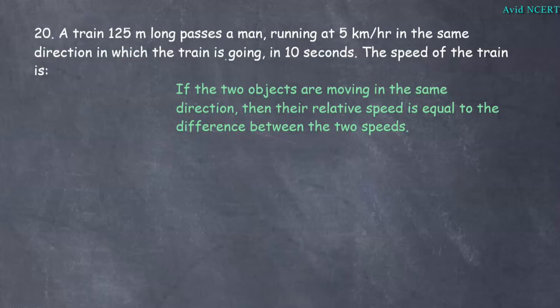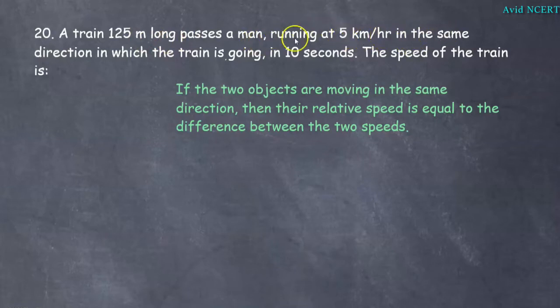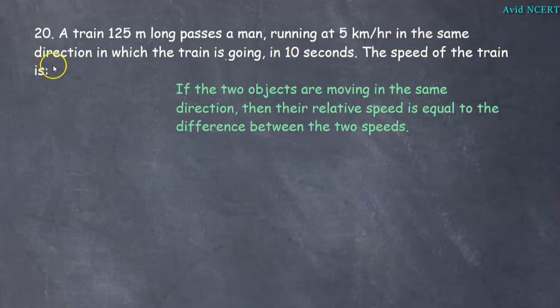Welcome to my channel, this is Geeta. A train 125 meters long passes a man running at 5 kilometers per hour in the same direction in which the train is going, in 10 seconds. The speed of the train is what?